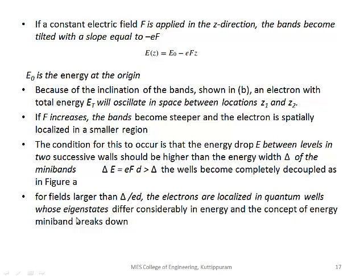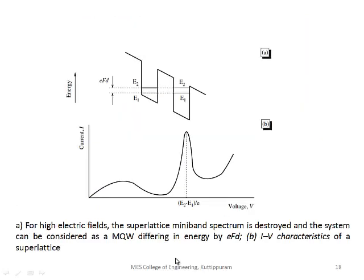When the miniband is destroyed, electrons get localized into particular regions. This is similar to the resonant tunneling diode, where the peak voltage corresponds to the energy difference (E2 - E1)/e.